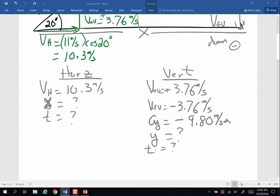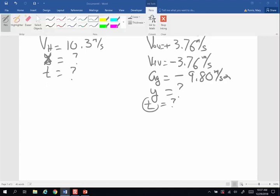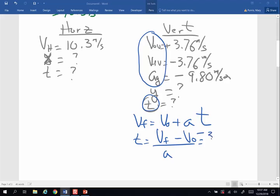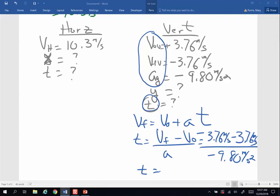So let's figure out what we can figure out. I can figure out the time. To find time, I'm going to use VF equals VO plus AT, one of my favorite equations. Time is going to be final velocity minus original divided by acceleration. Final velocity is a negative 3.76 minus a positive 3.76 meters per second divided by a negative 9.8 meters per second squared. And when I do the math for time, 3.76 divided by 9.8, I end up with total time of 0.767 seconds in the air.